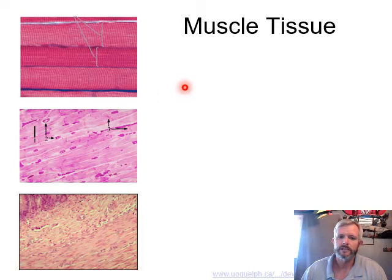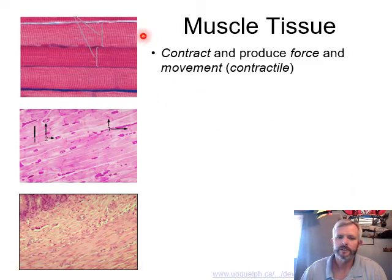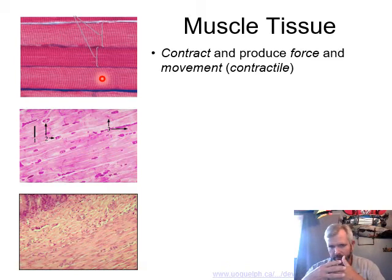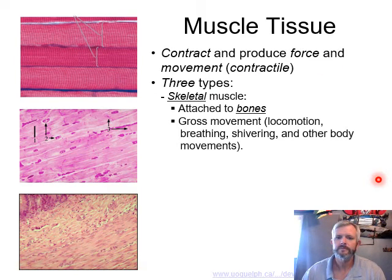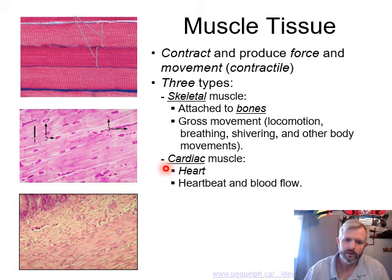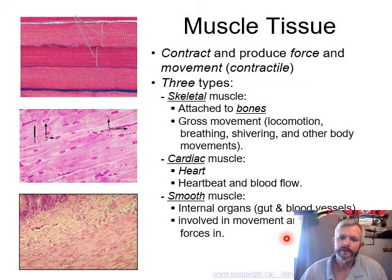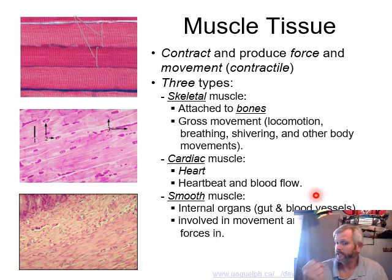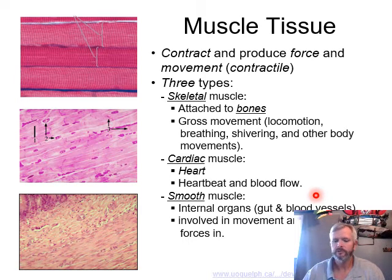Our muscle tissue — we have skeletal muscle with those striations. Those striations contain the contractile elements that allow the muscle to contract. Skeletal allows for movement. Cardiac muscle — we'll be focusing on it because we'll have multiple chapters dealing with the heart. And then smooth muscle: smooth muscle lines the blood vessels, which helps regulate blood pressure, and also helps move materials through our digestive tract. We'll be touching on smooth muscle and how it operates.